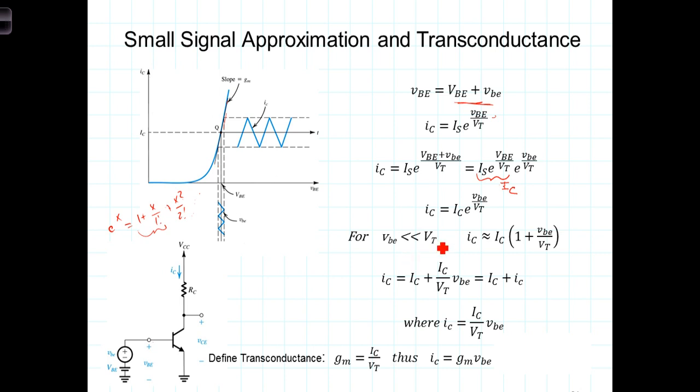So with that small signal approximation, replacing this exponential with this linearized term, we then have the total current is equal to I_C times 1 plus that ratio which had been in the exponent. So now we have the total current is equal to the bias current, capital I sub capital C, plus this expression here, I_C/V_T times the small signal variation. Thus we now have that linear superposition of the DC bias component of the collector current and the small signal AC component of the collector current.